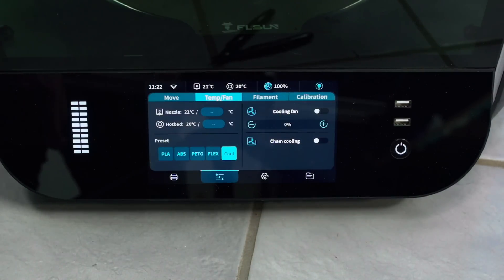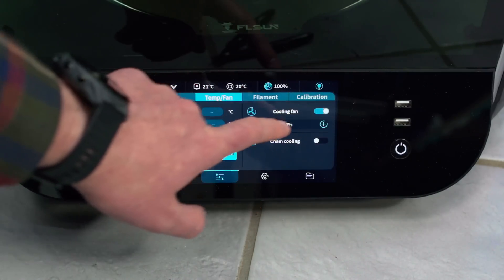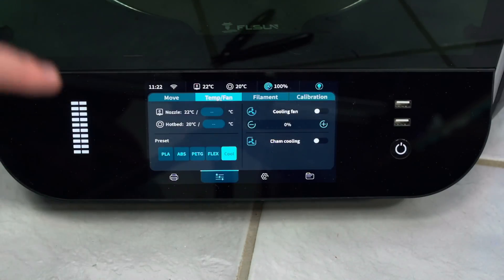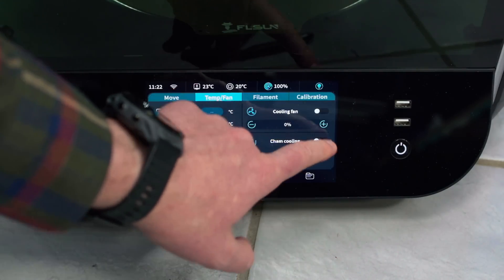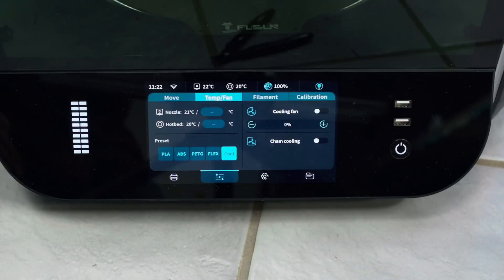On here you can adjust things like your nozzle and heat bed temperature. You can turn on and off the cooling fan and adjust the percentage of that cooling fan. You can really make this printer a lot more quiet by turning the cooling fan down by just a few percentages. Down to 60 or 80% fan, it will be a lot quieter printer.